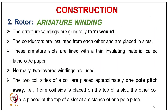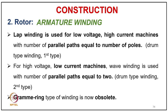Armature windings are generally form-wound; conductors are insulated and placed in slots lined with leatheroid paper. Two-layer windings are normally used. The two coil sides of a coil are placed approximately one pole pitch apart — one in the north pole region at the top of a slot and the other in the south pole region at the bottom of a slot one pole pitch away. Two types of armature winding exist: lap winding (low voltage, high current, parallel paths equal to number of poles) and wave winding (high voltage, low current, two parallel paths).